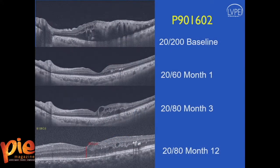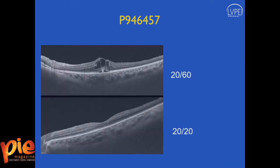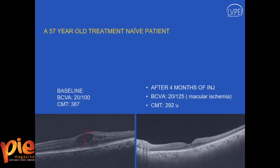This is a patient who had a baseline vision of 20/200, and after one injection of Ziv-Aflibercept there was complete resolution of edema. But as with any anti-VEGF injection, there was a recurrence, and this patient received four injections over 12 months — you can see there's still some fluid at 12 months. Another patient had acute onset vein occlusion with vision of 20/60, and with one injection the OCT completely dried up, vision came back to 20/20, and at the end of six months this patient maintained 20/20 vision.